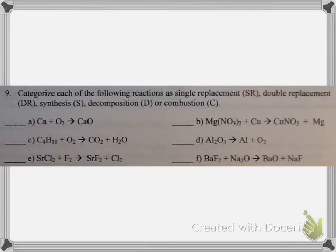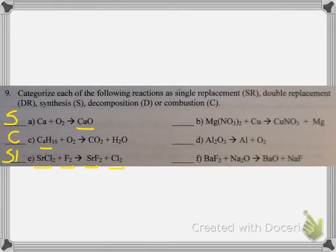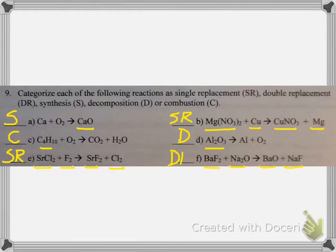Question number nine: categorize each of the following reactions. The first has a single product, so it's a synthesis or combination reaction. The second has a hydrocarbon, so it's a combustion reaction. The third has an element reacting with a compound producing an element and a compound — that's a single replacement. The fourth is also an element reacting with a compound producing an element and a compound — single replacement. The fifth has a single reactant — decomposition. The last has two compounds producing two compounds — double replacement.